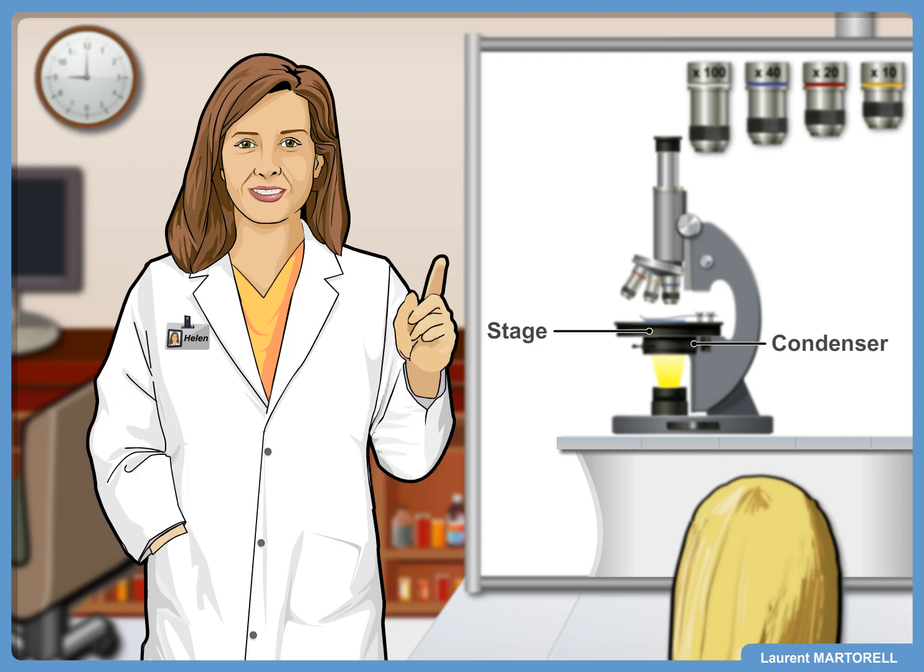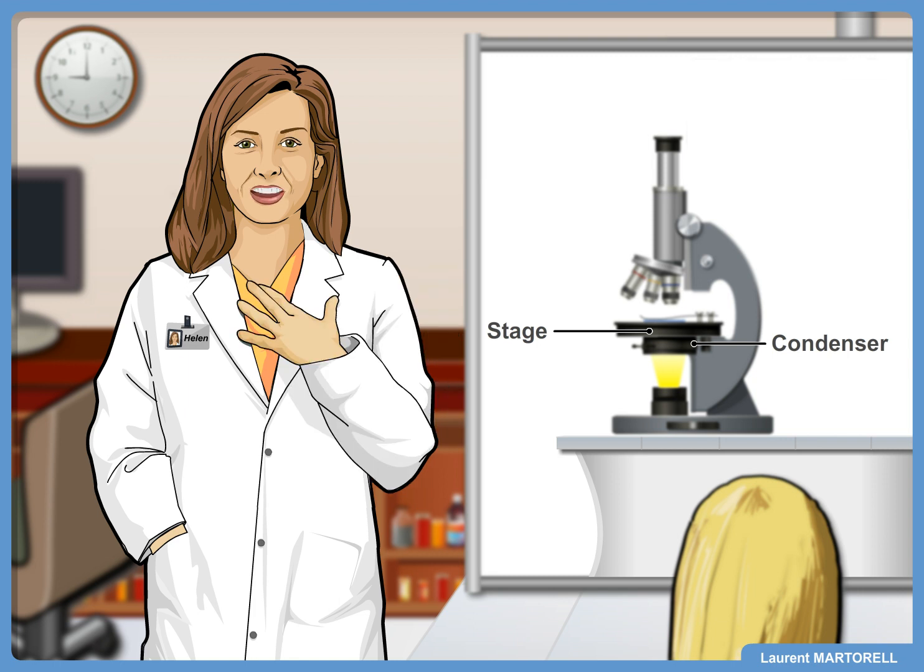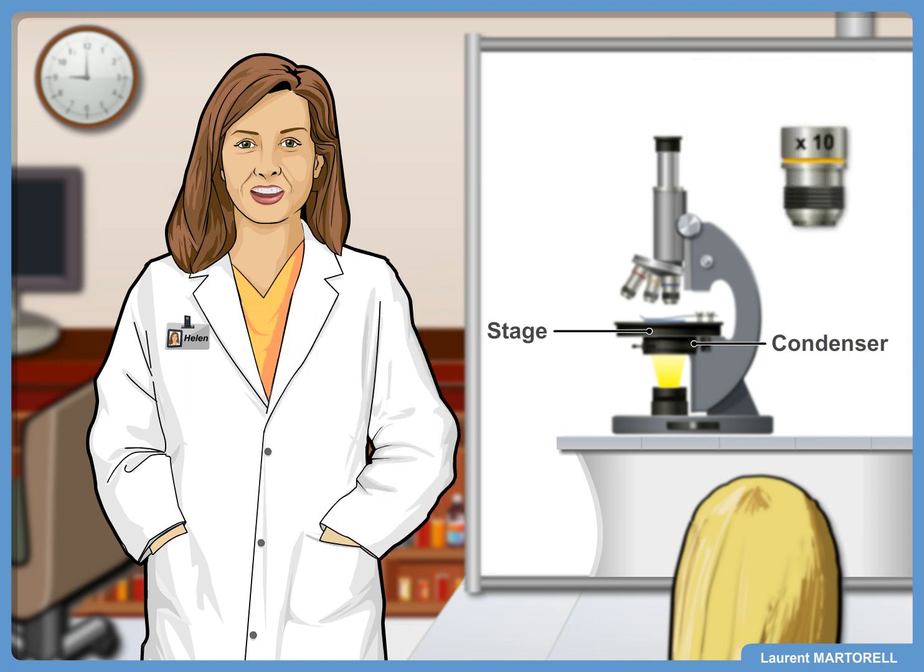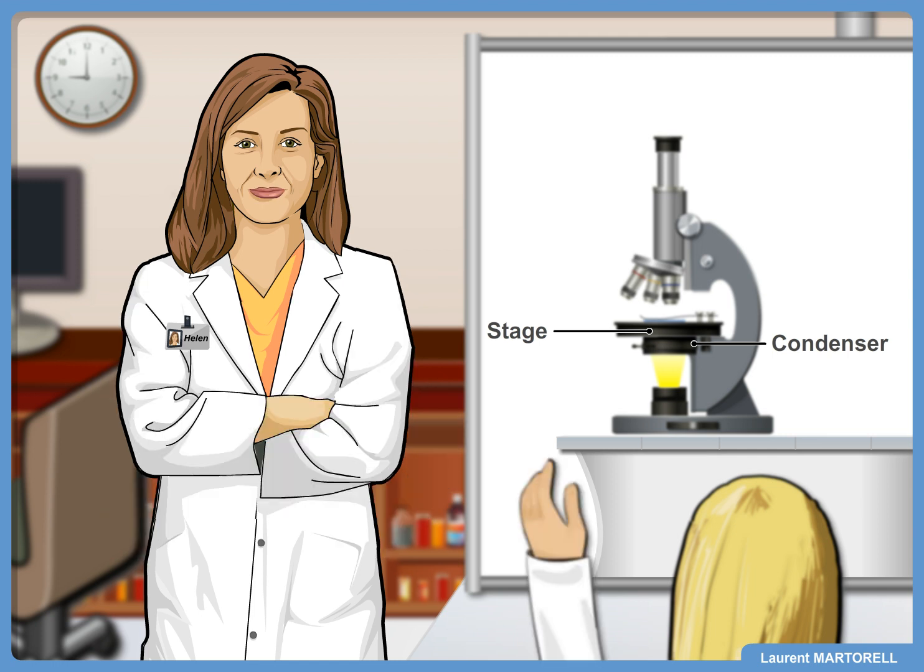For example, if you see the number 10 and the letter X written on the side of the objective, it means the object is magnified 10 times. How does it work? What is inside the objective to magnify the specimen? Inside each objective there is a lens. This lens corresponds to the magnifying unit of the objective.